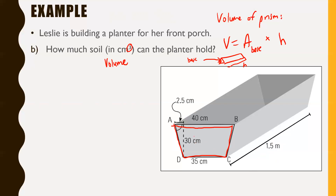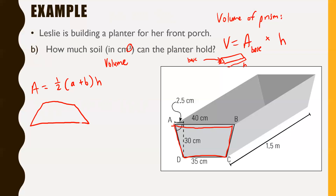Also on your formula sheet, right above where it says volume of a prism on the back side, it shows a trapezoid and gives the formula for its area. The area of a trapezoid is 1/2 times (a + b) times h. The picture on your formula sheet shows that a is one parallel side, b is the other parallel side, and h is the height of the trapezoid — not to be confused with the h for the prism height.